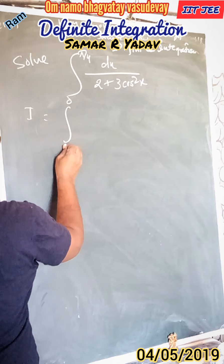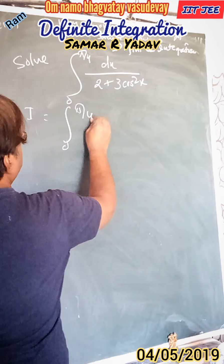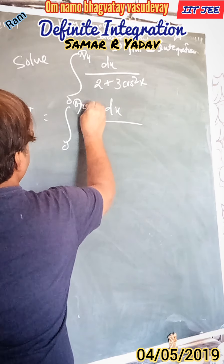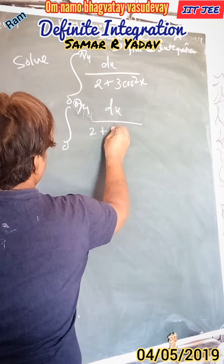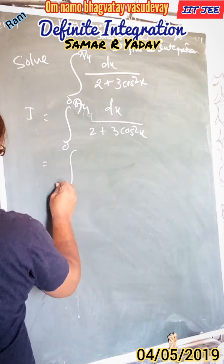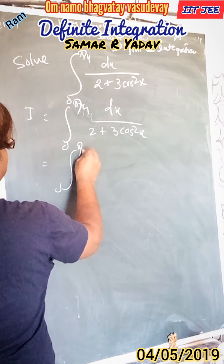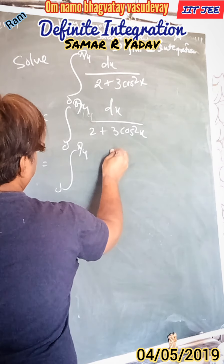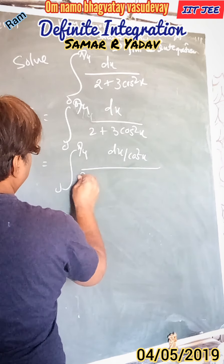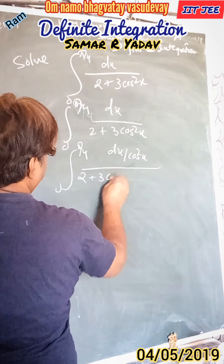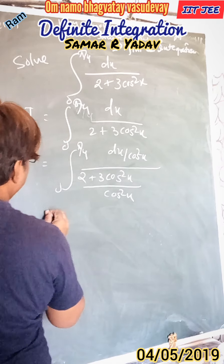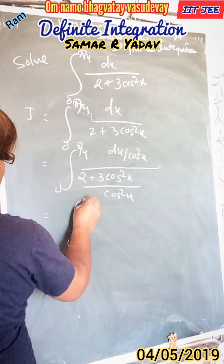We are given: I is equal to integration from 0 to π/4 of dx upon 2 plus 3 cos squared x. Now, solving this integration from 0 to π/4, we divide all terms by cos squared x.